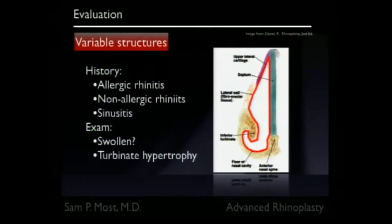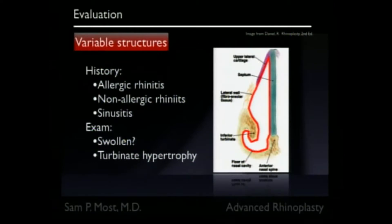This is a cross-section through the nose — this is the nasal bridge, this is the bottom, as if you're looking up someone's nose and they're laying flat. This is the septum here and the lateral sidewall here. This lining, when we get a cold or have allergies, becomes thickened. And very small changes in that radius can make a big difference in your ability to breathe through the nose.